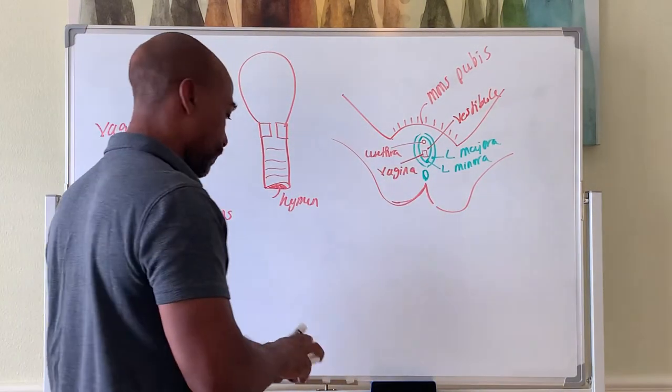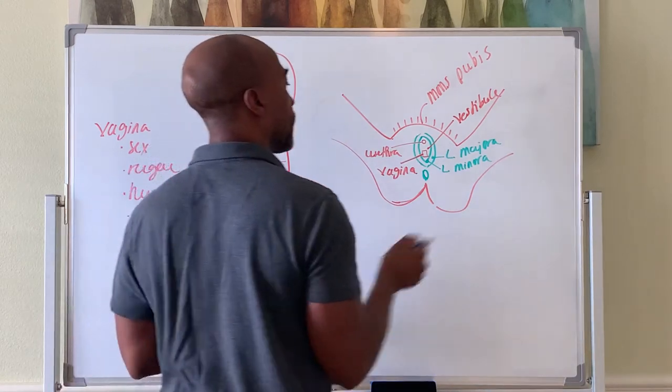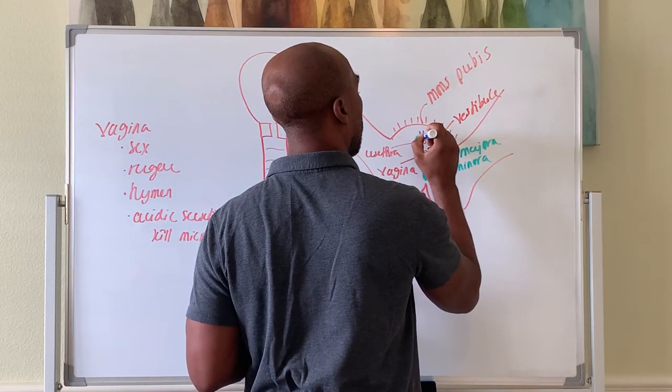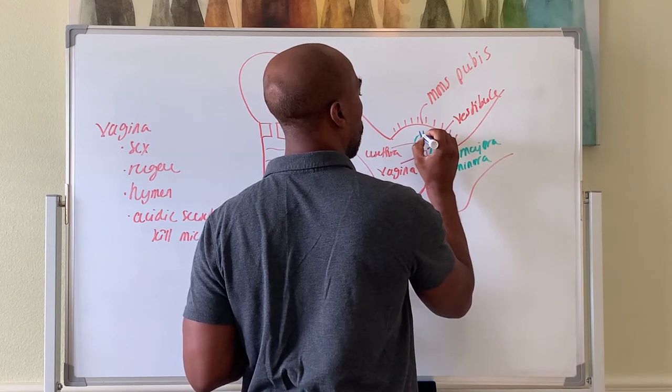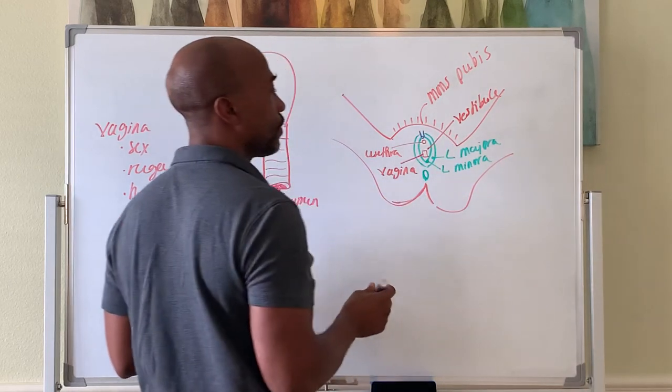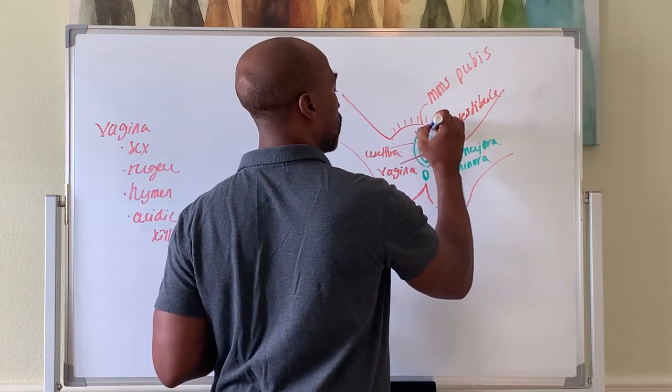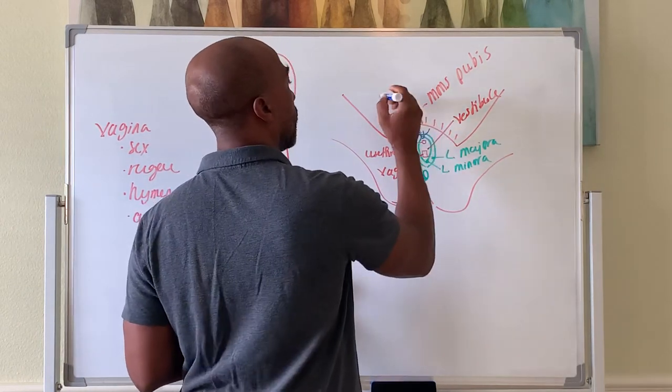You have the clitoris up here. It's a homologue to the male penis. It also becomes erect during arousal. You also have a prepuce or foreskin. So this is your clitoris here.